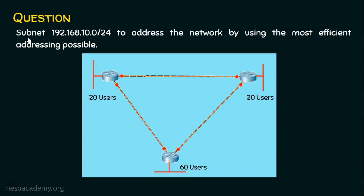Here is the question: subnet 192.168.10.0/24 to address the network given in the scenario by using the most efficient addressing possible. We are not going to do subnetting based on the FLSM approach, which is fixed length subnet masking. Rather, we are going to use the VLSM approach, meaning the subnet mask will differ for each network we address.